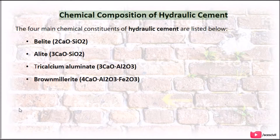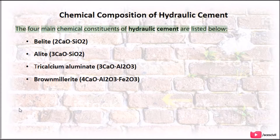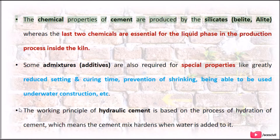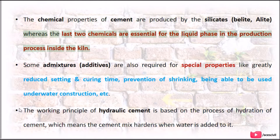Chemical composition of hydraulic cement: The four main chemical constituents of hydraulic cement are listed below. Belite (2CaO·SiO₂), Alite (3CaO·SiO₂), Tricalcium aluminate (3CaO·Al₂O₃), and Brownmillerite (4CaO·Al₂O₃·Fe₂O₃). The chemical properties of cement are produced by the silicates — belite and alite.